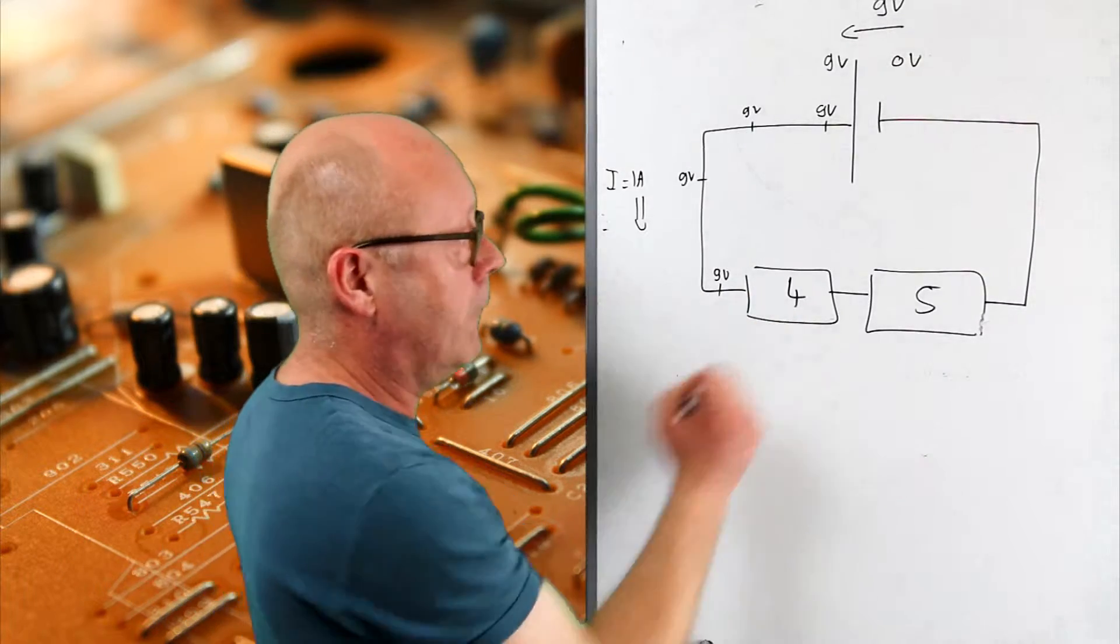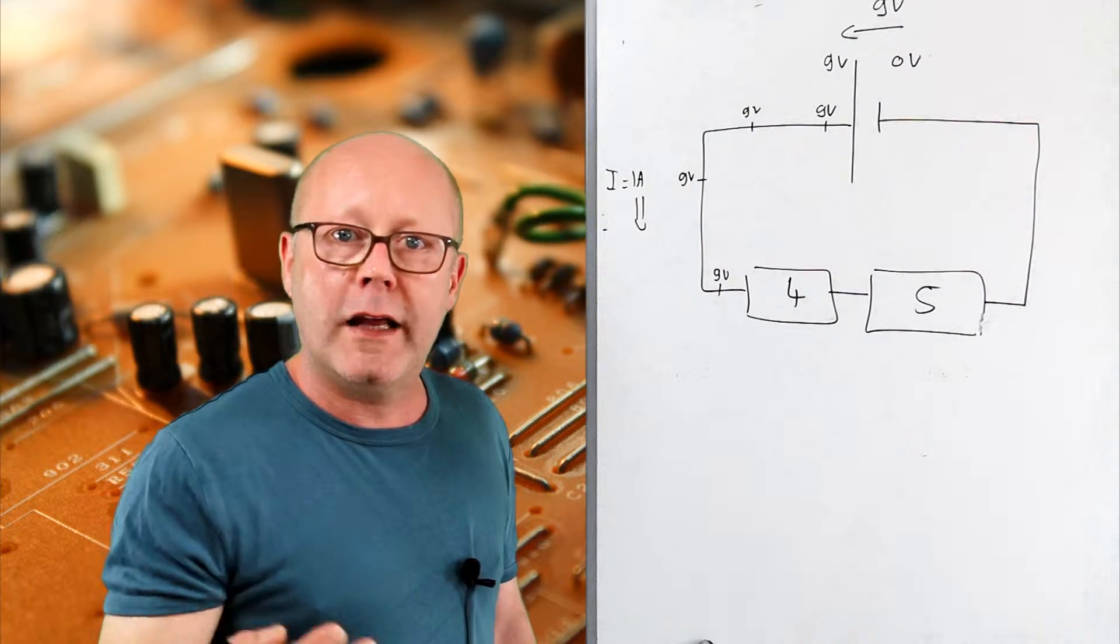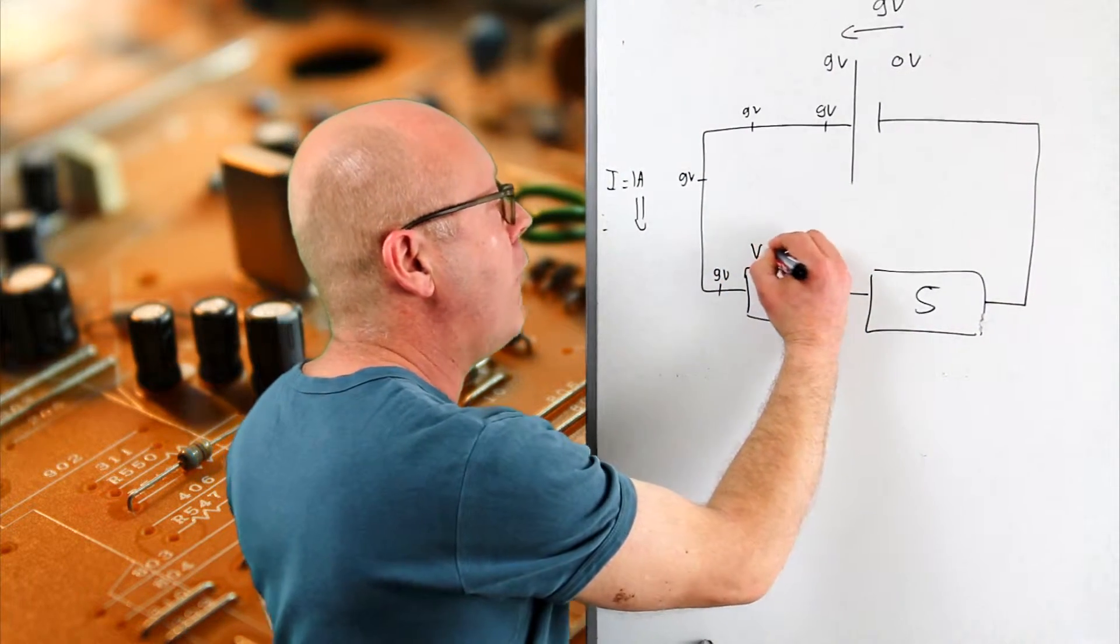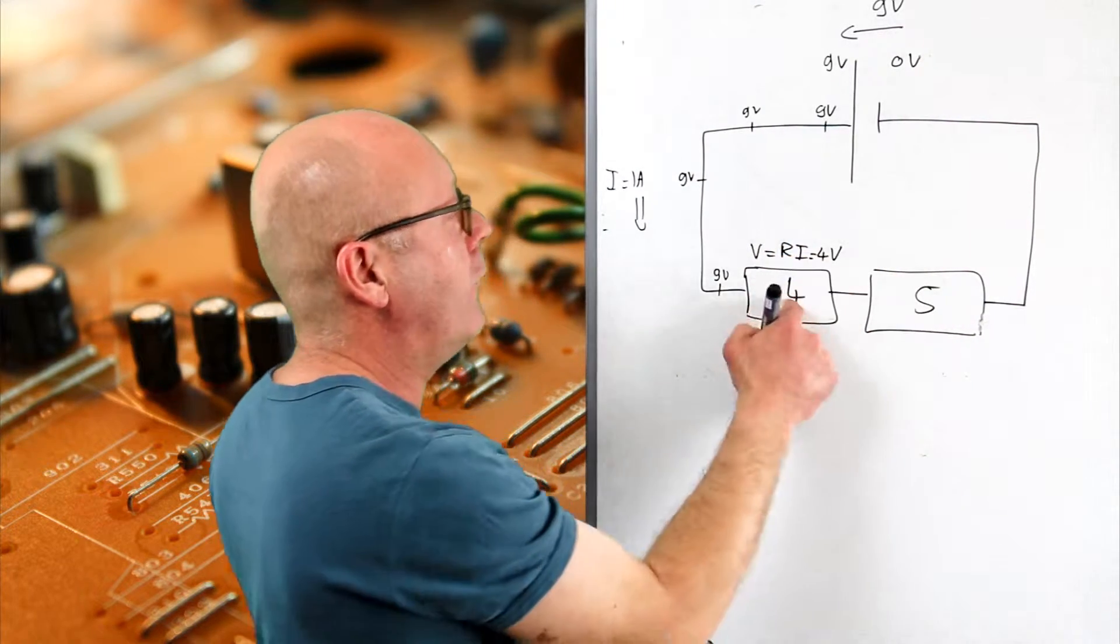So what happens here? Well, the charges going through the resistor will lose energy, and there will be a potential drop of v equals ri, which is four volts.